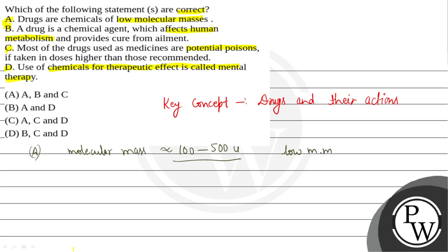Molecular mass is 100 to 500 U. Drugs क्या करते हैं? यह macromolecular targets के साथ interact करते हैं, जिससे कि यह कोई भी biological response produce करेंगे. और इनका खुद का molecular mass बहुत ही low होता है. तो statement A जो है, यह correct statement है.